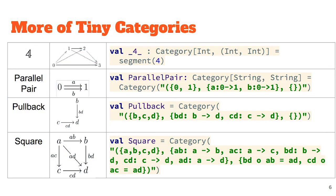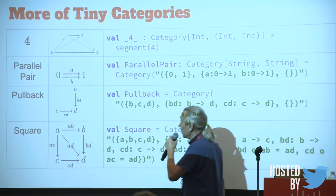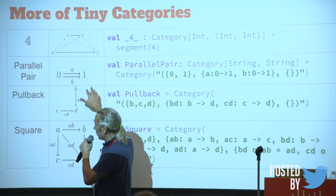More tiny categories: category four is a linear order of four objects. The parallel pair has two objects zero and one, and two arrows a and b — no composition needed beyond identities. The constructor takes a string and parses it: we define objects zero and one, arrows from zero to one, and composition with identities is inferred automatically.